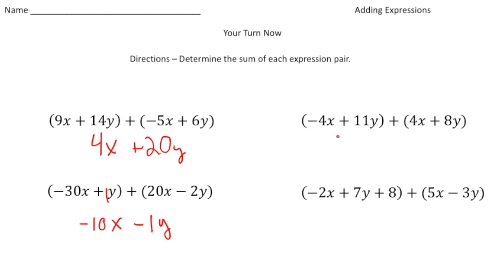The next one, negative 4x plus 11y plus 4x plus 8y. Notice the terms that we have for x's, they're opposites. So when I add them together, they cancel out. All that's left now is just the 11y and the 8y. And 11y plus 8y gives us 19y.